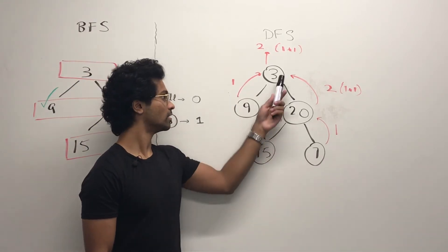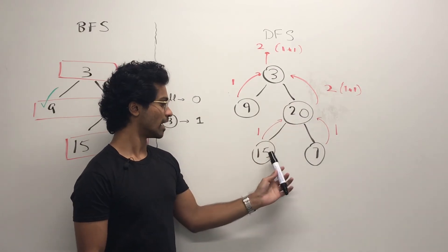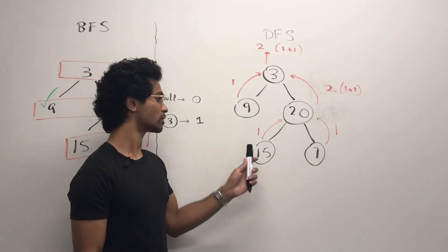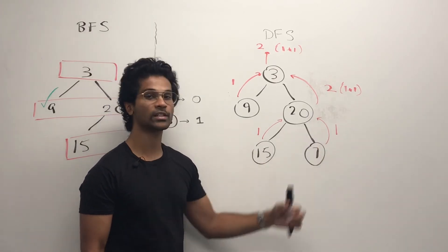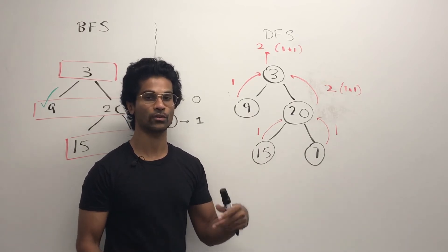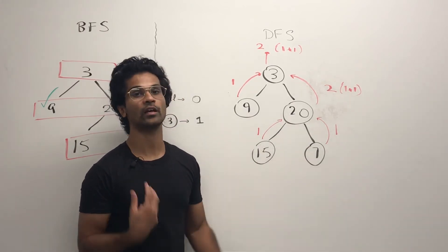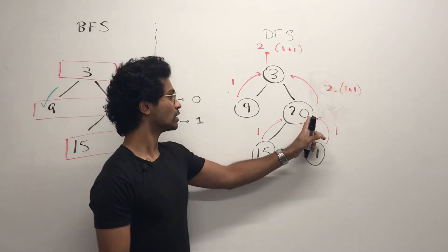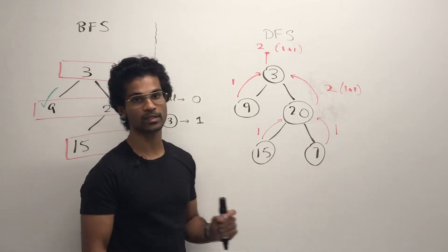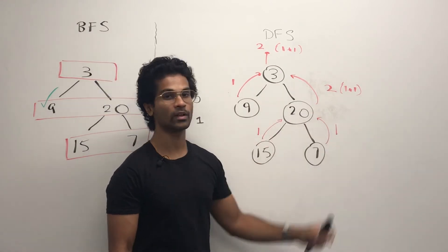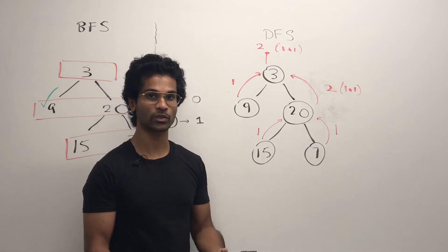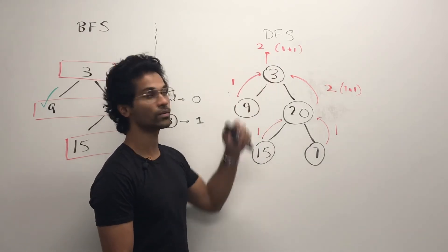20 is going to ask its children, 15 and 7. 15 and 7 are both base cases, so they both return 1, and 20 is going to do a comparison. It picks the minimum out of 1 and 1, and adds 1 to include itself. Then 20 returns 2 back to 3, and the final root, 3, is going to decide between 1 and 2, pick 1 because it wants the minimum, add itself, and return 2.